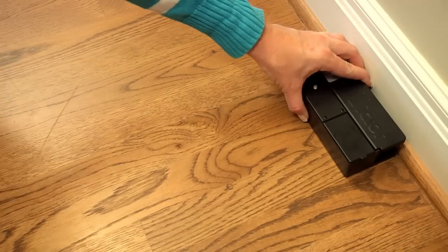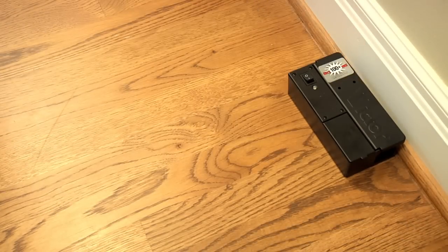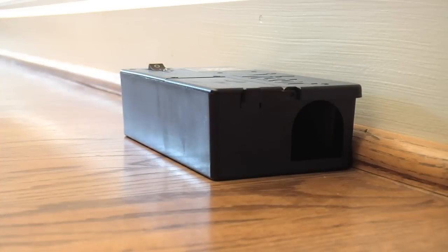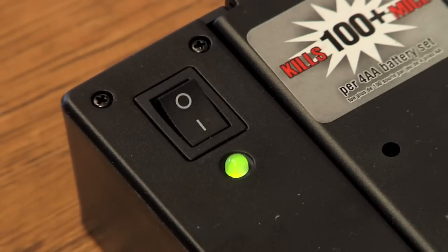Place the trap where you've seen signs of rodent activity or along the wall where rodents primarily travel. The trap should be placed lengthwise against the wall with the entrance hole nearest the wall. Turn on the trap. A green light will blink once showing the trap is working properly.